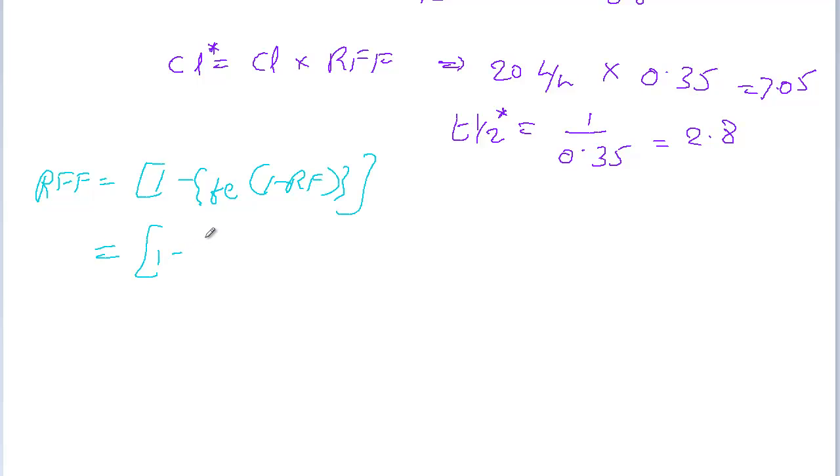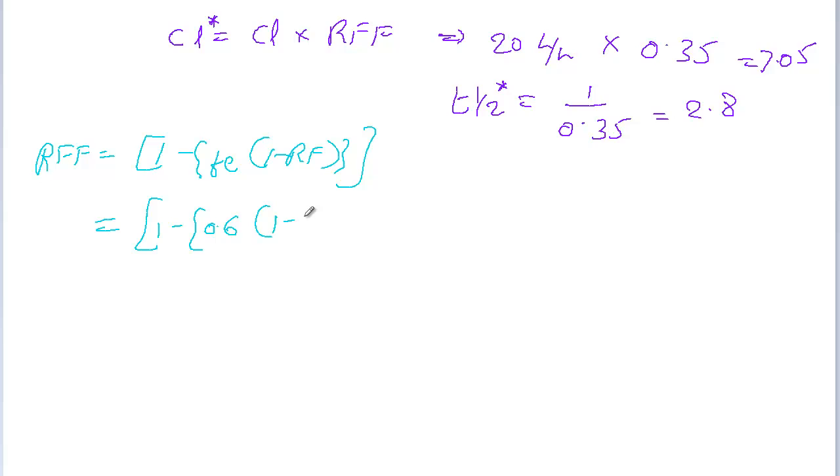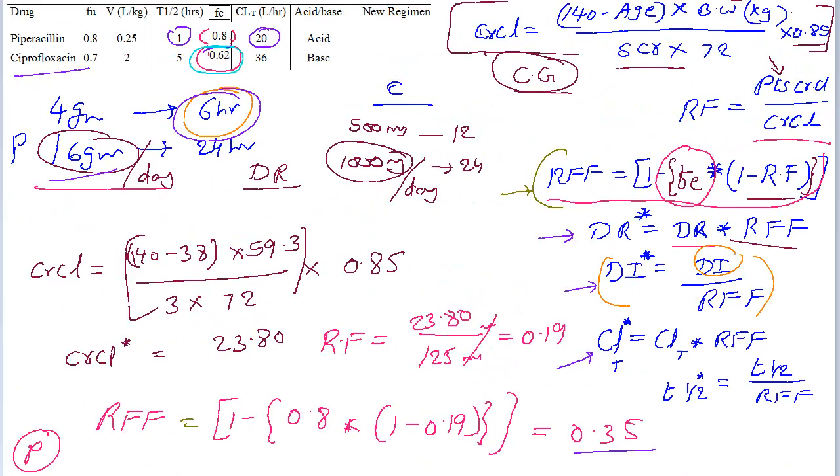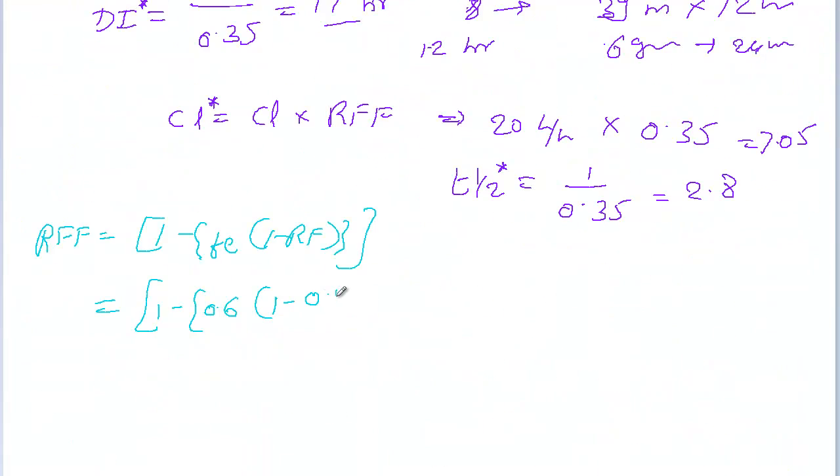1 minus the fraction excreted for ciprofloxacin is 0.62 times 1 minus renal function. Just now we calculated the renal function for this patient as 0.19. The renal fudge factor for ciprofloxacin is 0.5.